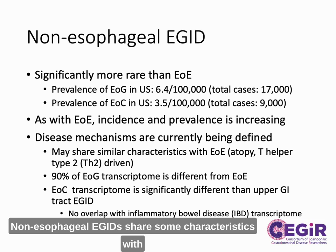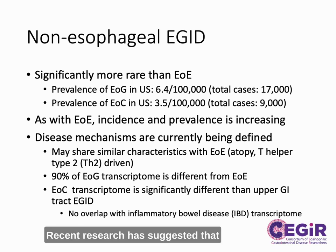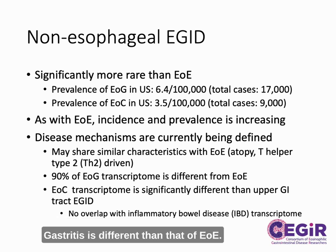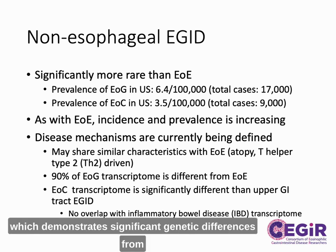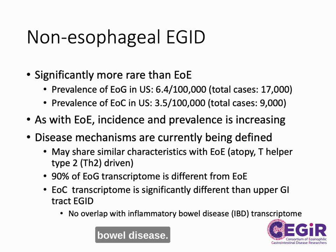Non-esophageal eGIDS share some characteristics with EOE, such as high rates of atopy and a TH2-driven mechanism. Recent research has suggested that there can also be differences. For example, 90% of the transcriptome of eosinophilic gastritis is different than that of EOE. This is also true of eosinophilic colitis, which demonstrates significant genetic differences from not only upper GI eGIDS, but also inflammatory bowel disease.